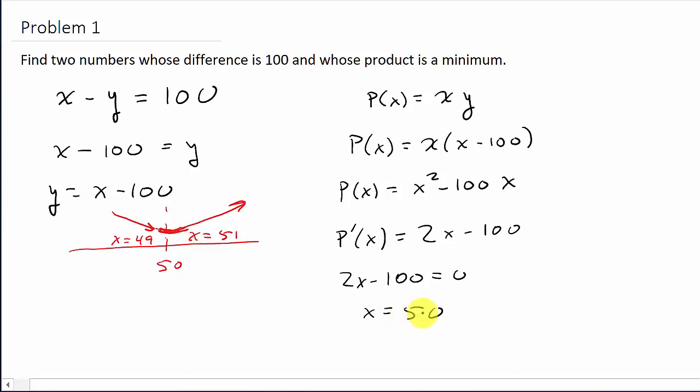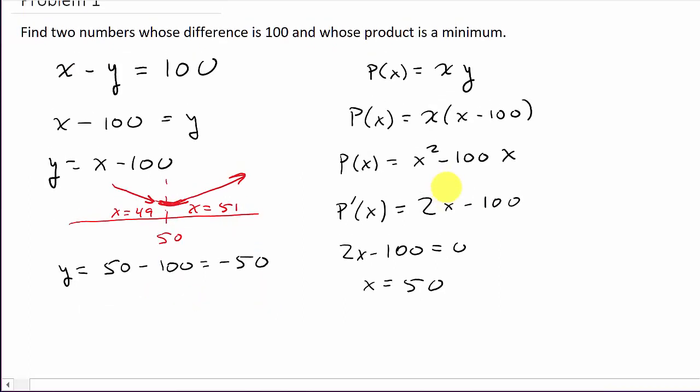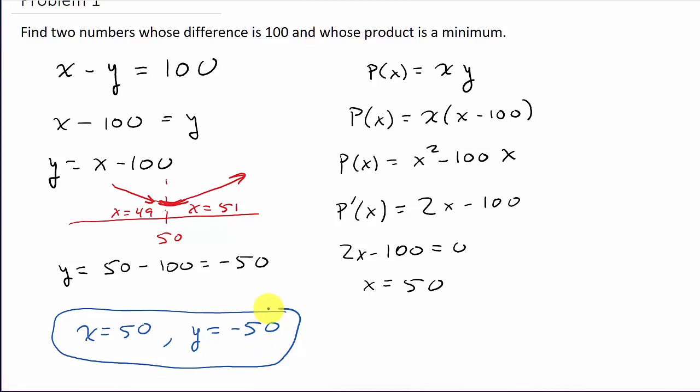Okay, so x equal 50 minimizes. Well, there's x, but it wants us to find two numbers. So what would y be? Well, we know x minus y equals 100. Or, look at this, y is equal to x minus 100. So 50 minus 100 is equal to negative 50. So the two numbers is x equal 50 and y equals negative 50. And that's the two numbers whose product would be a minimum. And their difference is 100.